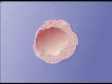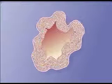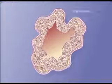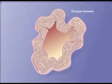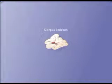Following ovulation, the granulosa cells divide rapidly and enlarge to form the yellow corpus luteum. When the corpus luteum degenerates, it forms the white corpus albicans.